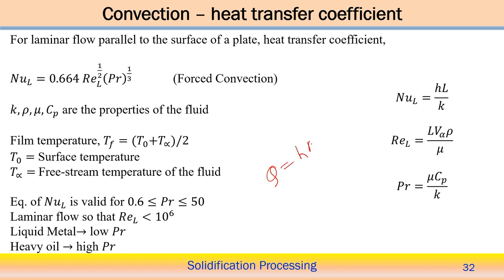We have already discussed that the convective mode of heat transfer follows Q = hA(T₀ - T∞). It depends on the convective mode of heat transfer over the surface, the fluid medium over the surface, the velocity pattern, and geometric shape — all of which actually decide the heat transfer coefficient. This heat transfer coefficient is not as straightforward as the thermal conductivity K, which we can get directly from material properties.